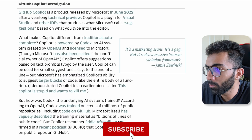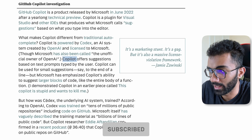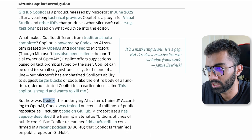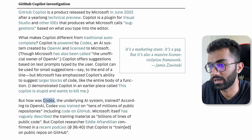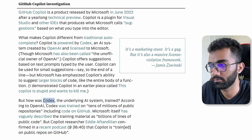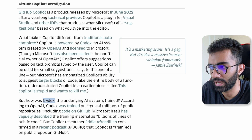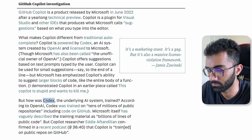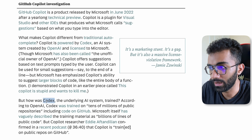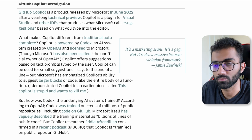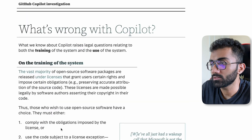Copilot is technically based on Codex. Codex is a code generation engine based on GPT-3, built by OpenAI, and this is in collaboration with Microsoft. So that is all good — but what is exactly wrong with Copilot?